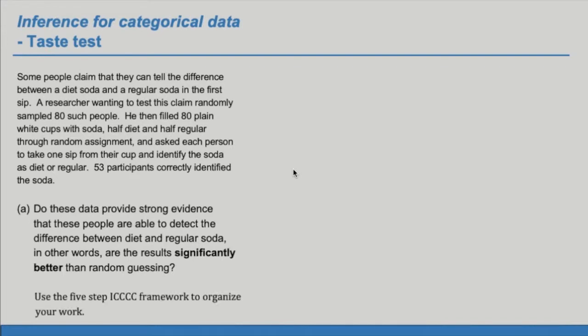The words significantly better indicate that we can carry out a test of significance or test of hypothesis. To organize our work, we can use the five-step identify, choose, check, calculate, and conclude framework.